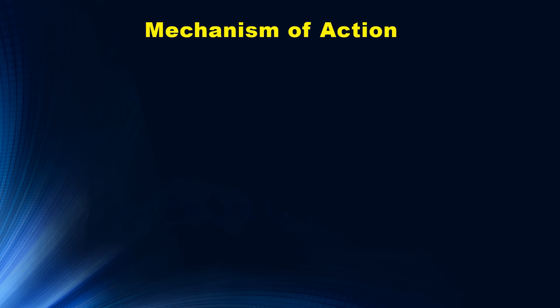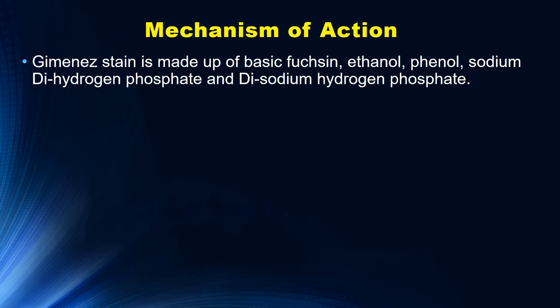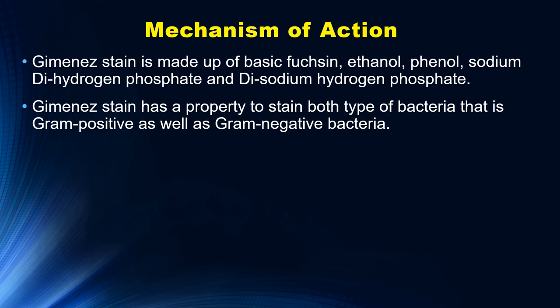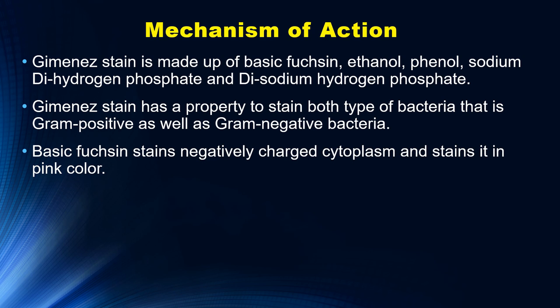Now let's see the mechanism of action. Gimenez stain is made up of basic fuchsin, ethanol, phenol, sodium dihydrogen phosphate, and disodium hydrogen phosphate. These are the chemicals used for preparation of Gimenez stain. Gimenez stain has the property to stain both types of bacteria — gram-positive as well as gram-negative. The basic fuchsin present in Gimenez stain stains the negatively charged cytoplasm of the cell in pink color.